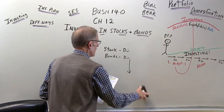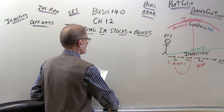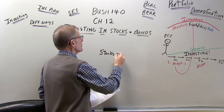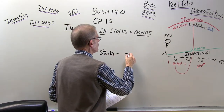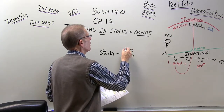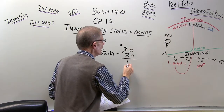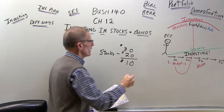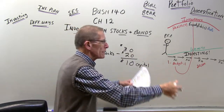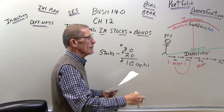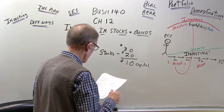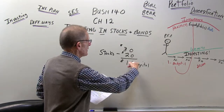Capital gain is another return. Primarily we're thinking about stocks when we think about capital gains. You buy stock for $20, keep it for a year, and sell it for $30 — you've made $10 on that stock. That's a capital gain. So one way you receive money is income that comes off your investments periodically, and another way is capital gains.